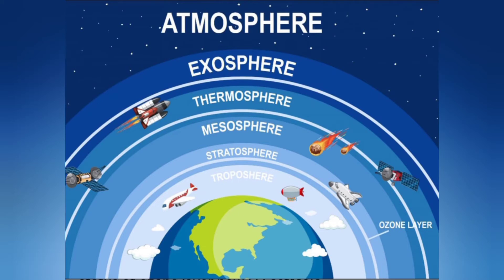Stratospheric ozone is good ozone. It forms about 10 to 30 miles above the earth's surface and forms a protective layer called the ozone layer that shields us from too much of the sun's harmful ultraviolet radiation.